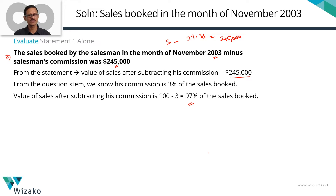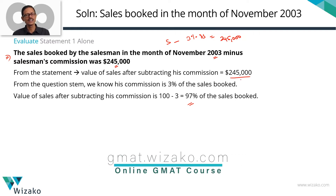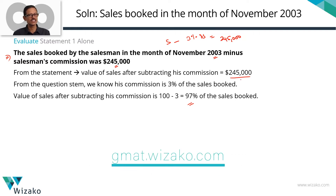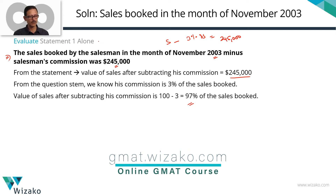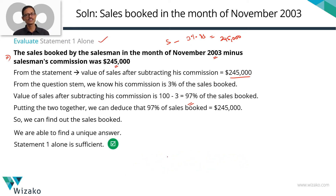Can we find out 100% of the sales booked? Certainly, yes. The only thing is, don't waste time trying to find what that value is. We are not doing a problem-solving question. In data sufficiency, all that is needed is to figure out whether the answer is going to be unique. If 97% is equal to $245,000, then 100% is a unique value. So, statement 1 alone is sufficient to answer the question.